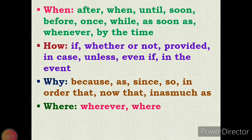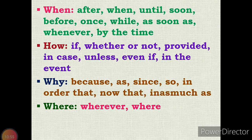We can use subordinating conjunctions to find an adverbial clause. For 'when': when, after, until, soon, before, once, while, as soon as, whenever, by the time. For 'how': if, whether or not, provided, in case, unless, even if, in the event. For 'why': because, as, since, so, in order that, now that, inasmuch as. For 'where': where, wherever. We can use these subordinating conjunctions to identify an adverbial clause.